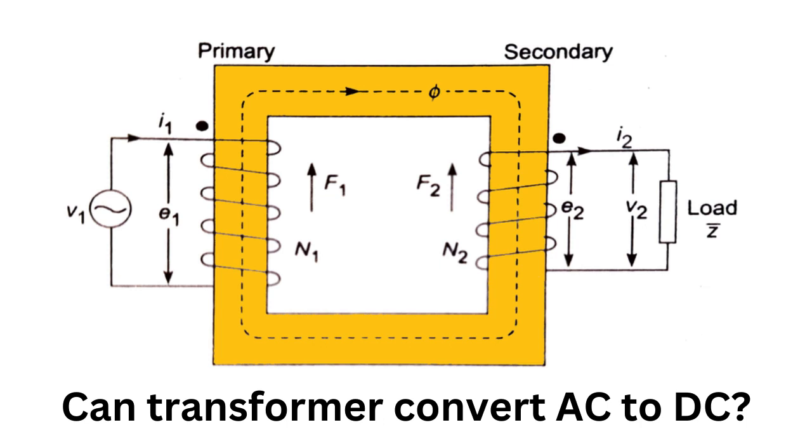However, it is important to note that a transformer cannot convert AC to DC. This is because a transformer is designed to change the voltage level of an alternating current, not to change its direction of flow.